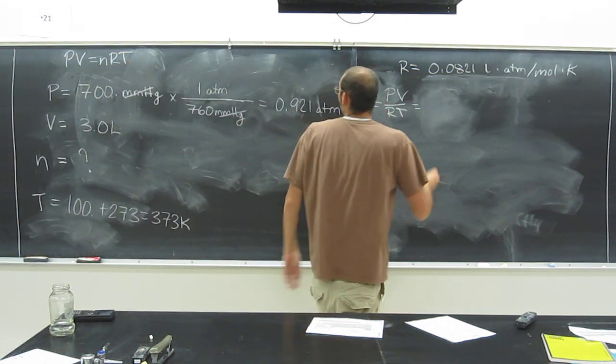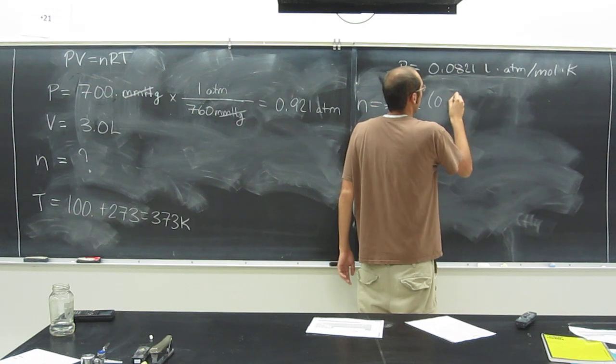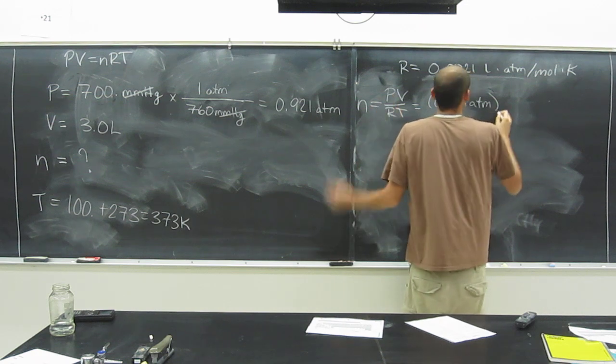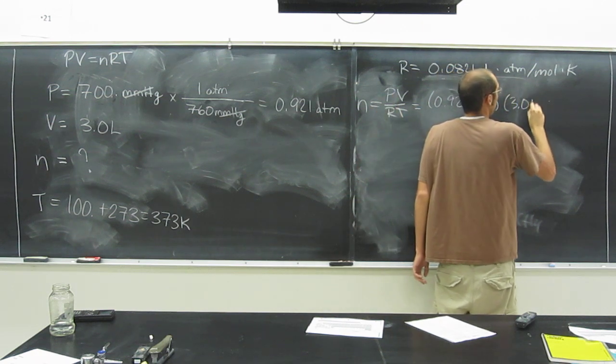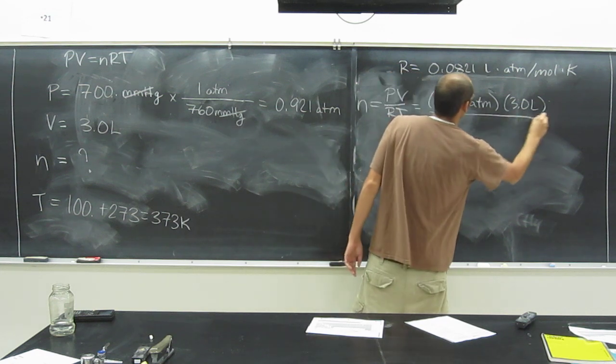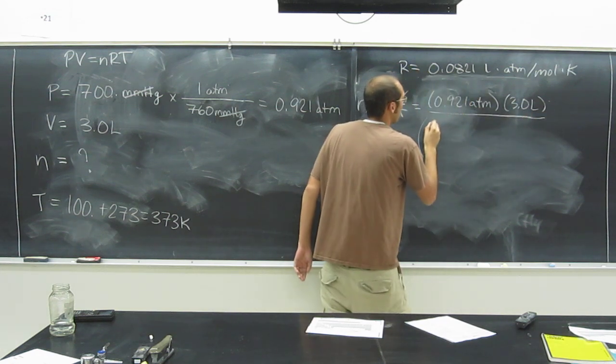So, we've got P now, right? 0.921 ATM, V, yes, three liters, R, oh, new piece of chalk, sorry guys.